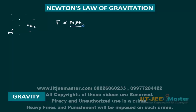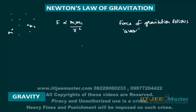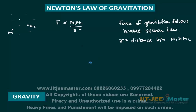F is proportional to M1 M2, and also inversely proportional to R squared. So these forces follow the inverse square law. We must remember that Gravitational force follows inverse square law. M1 and M2 are the masses of the particles, and R is the distance between M1 and M2.